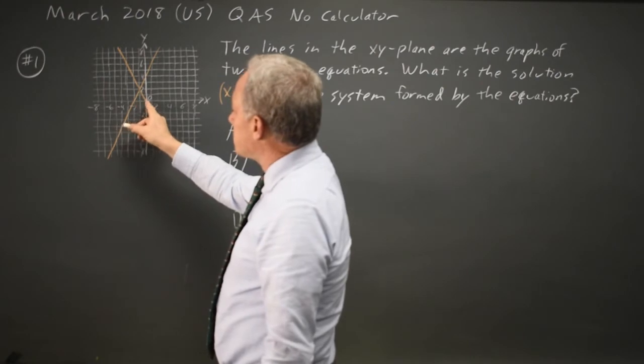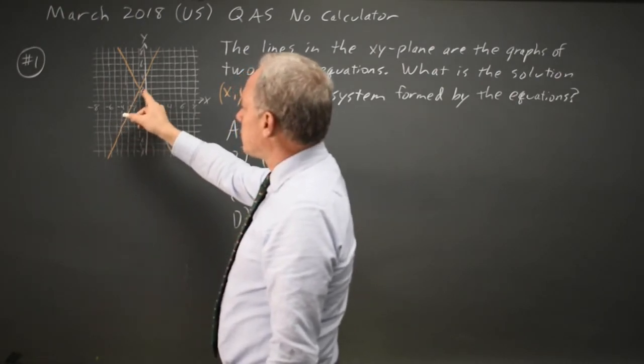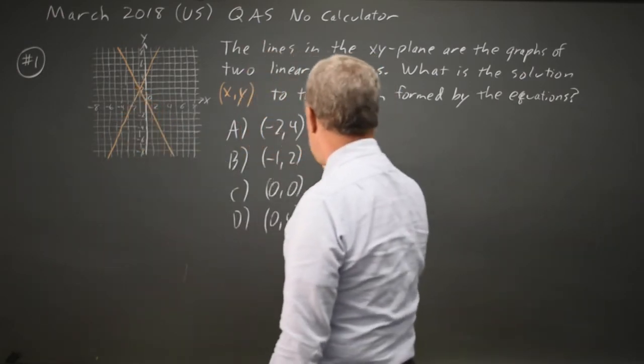The x value is negative 1 because it's the line halfway between 0 and negative 2. The y value is positive 2, which is labeled. So the choice would be B.